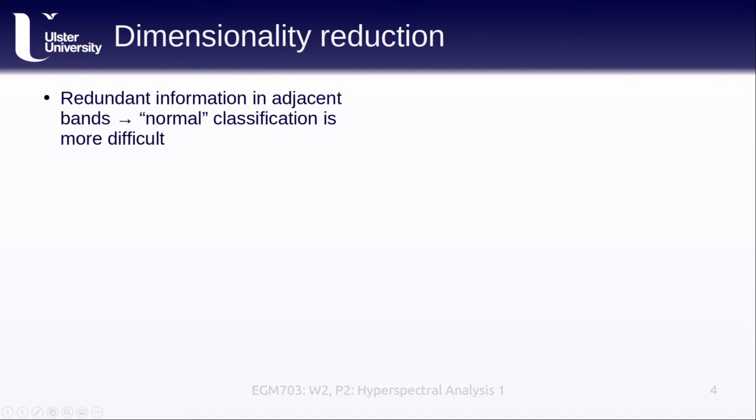All of these things together mean that while hyperspectral remote sensing is an extremely powerful tool for many applications, it is not without significant challenges. As mentioned on the previous slide, and as we covered in EGM 702, the reflectance values in adjacent bands are often highly correlated, meaning that we end up with a lot of redundant information. This redundancy means that the normal classification methods we've seen, such as maximum likelihood, are significantly more difficult to apply to hyperspectral images directly.